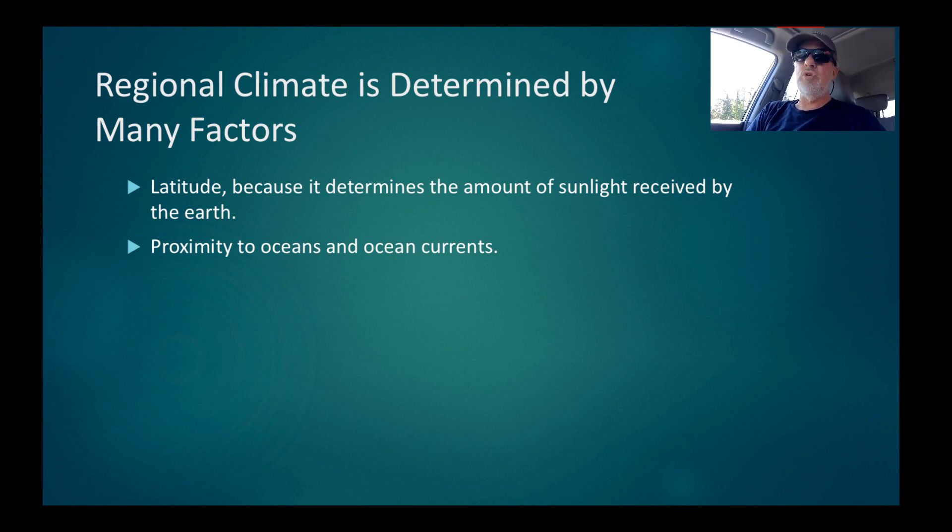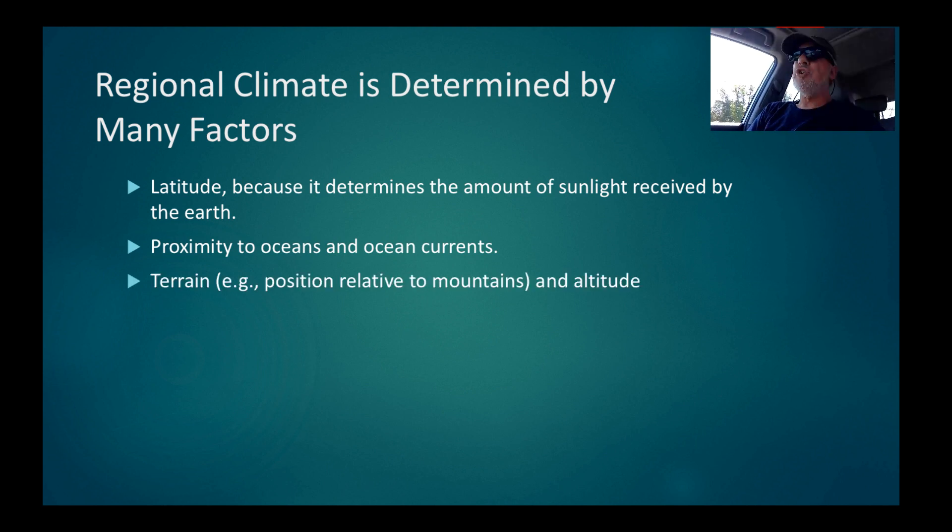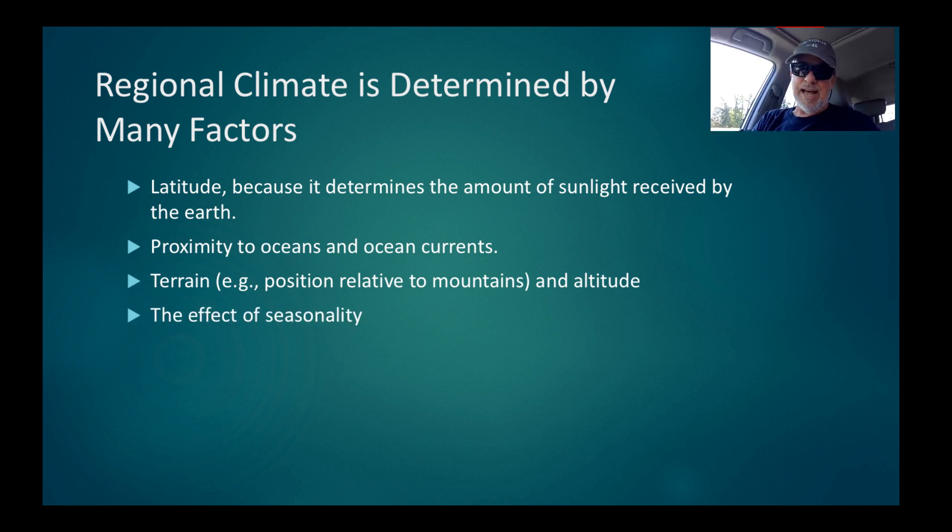Second, proximity to oceans, and surprisingly, also to ocean currents. And terrain and altitude. Terrain, for example, position relative to mountains, what's the surrounding landmass like near you. Altitude, how high you actually are up above sea level. And then the effect of seasonality, of course.